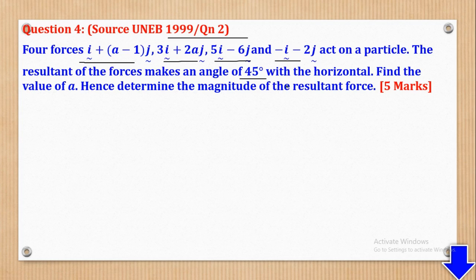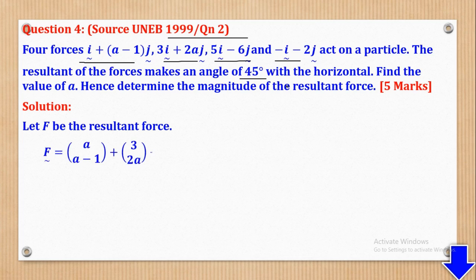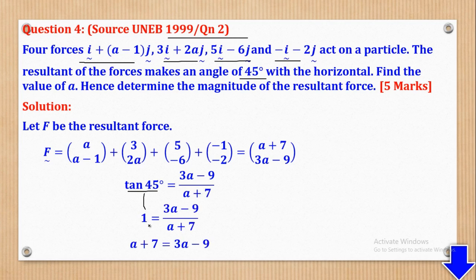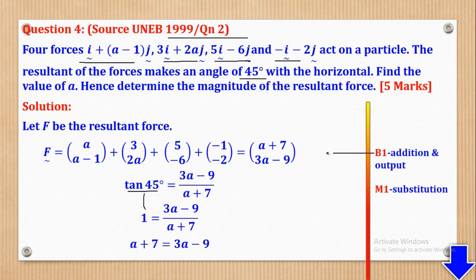We let F be the resultant force, then add all the forces to get the resultant: (A + 7)i + (3A − 9)j. Since the resultant makes an angle of 45° with the horizontal, tan 45° = (3A − 9)/(A + 7). Since tan 45° = 1, we set 3A − 9 = A + 7. B1 is for adding everything and M1 for substituting the angle condition.